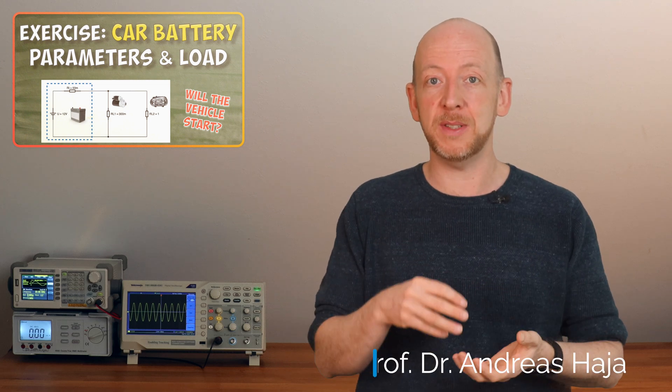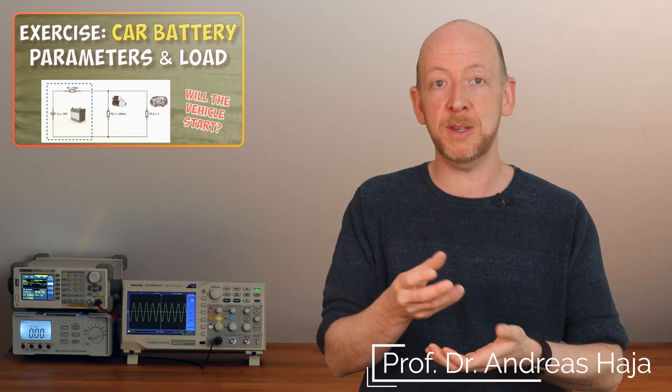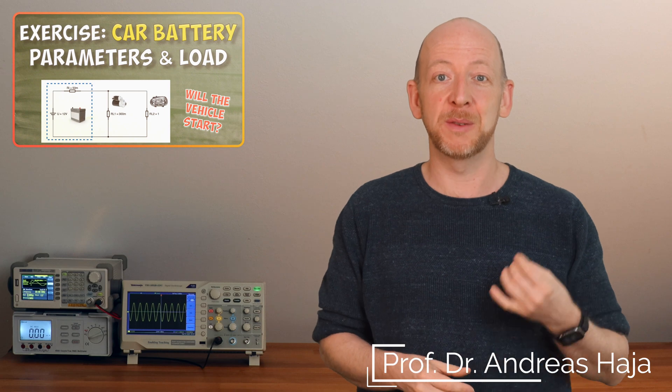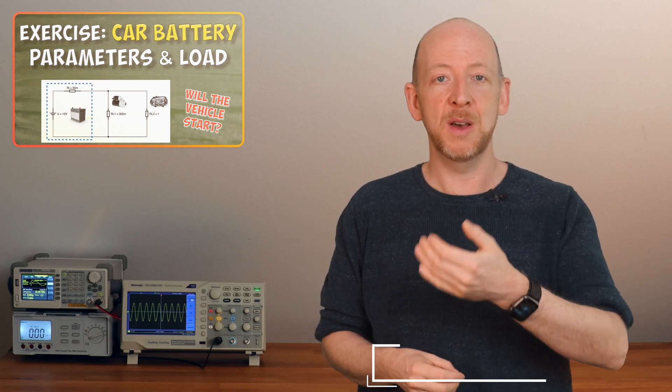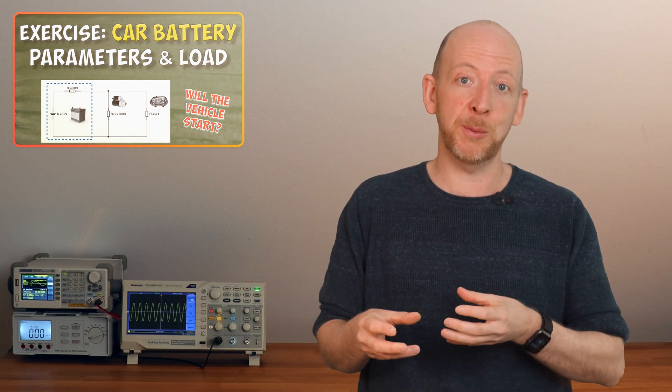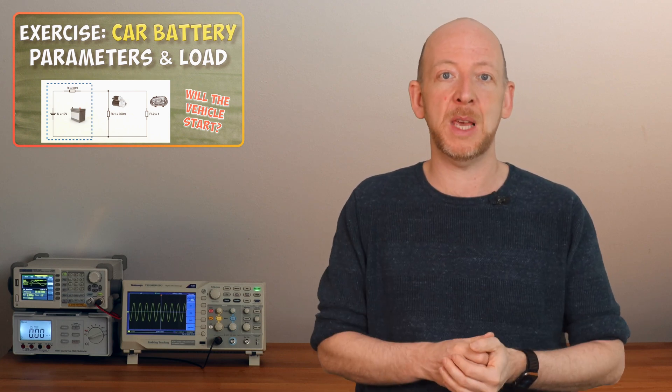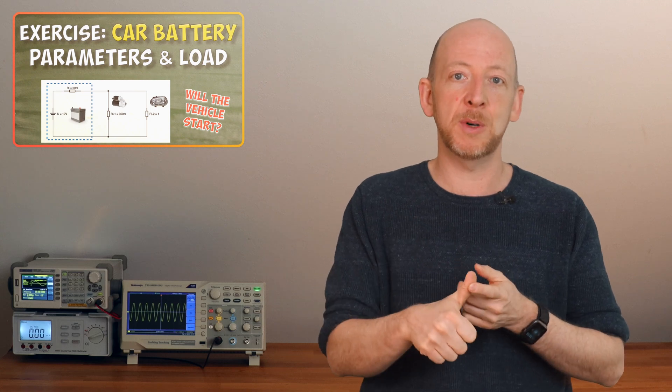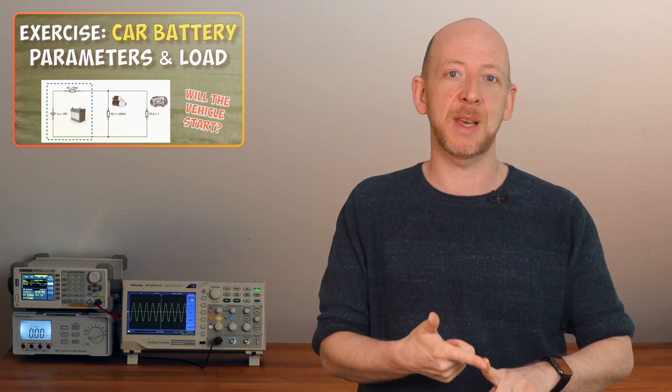In this video you will learn what influence the internal resistance of a battery, of a real voltage source, has on the voltage level that's actually available for a circuit or for a component in a circuit. We will conduct an exercise and look at a car battery and check whether it is able to power both the starter motor and the car lights at the same time.